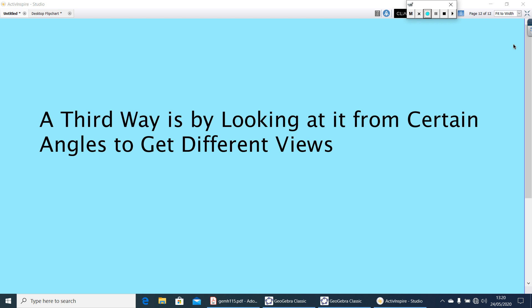The third and the last way of observing a 3D shape is an object is looking at it from certain angles to get different views. So, from different angles, you can look at an object, then you will get the different shapes.